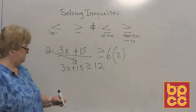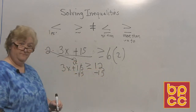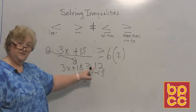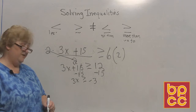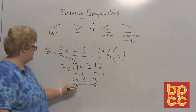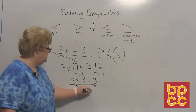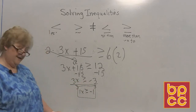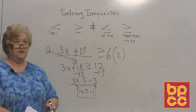Now we're back to something easy. Tell the 15 to move — take away 15 from both sides. We now have 3x is greater than or equal to 12 minus 15, which is negative 3. The x is not negative, so no sign change. Divide both sides by 3: 3 into 3 is 1x, and 3 into negative 3 is negative 1. Our answer is x is greater than or equal to negative 1. We'll do a few more in our next video with some additional rules.